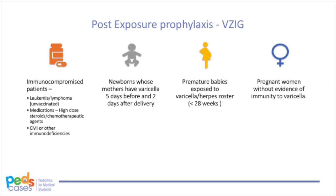Speaking of post-exposure prophylaxis — varicella zoster immunoglobulin, or VZIG, is a monoclonal antibody available against varicella that can be used for post-exposure prophylaxis in high-risk patients. VZIG is indicated for: exposed persons at high risk of severe varicella, including immunocompromised patients such as those with leukemia, lymphoma, congenital immunodeficiency, or those on high doses of steroids or chemotherapy; infants at risk for neonatal varicella, like newborns whose mothers have varicella around the time of delivery and premature infants exposed to varicella; and exposed pregnant women without evidence of previous immunity to varicella.